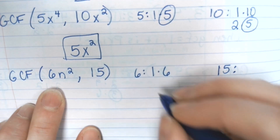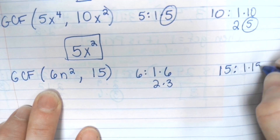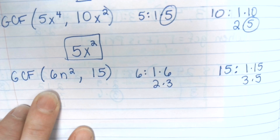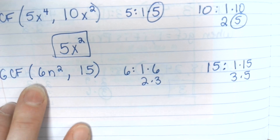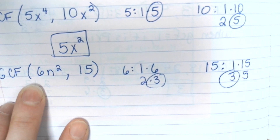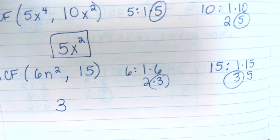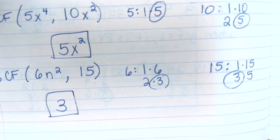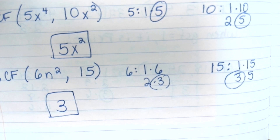List out your factors first. Now what's your GCF of the numbers? Three. What about variables — do they both have an N? No. So our GCF is just three. You are going to do the quizzes — that is online. Make sure to show your work on paper.